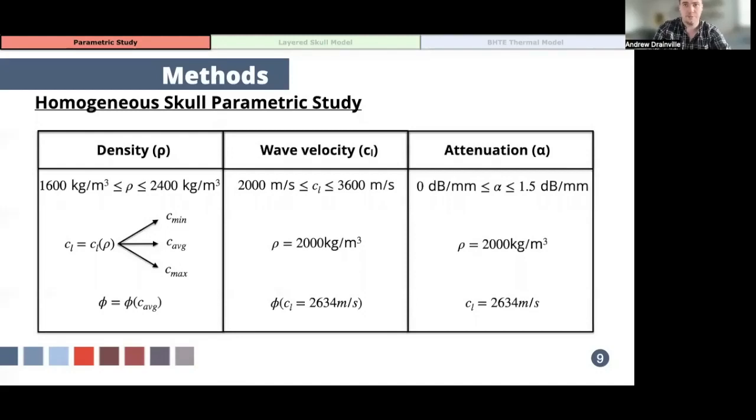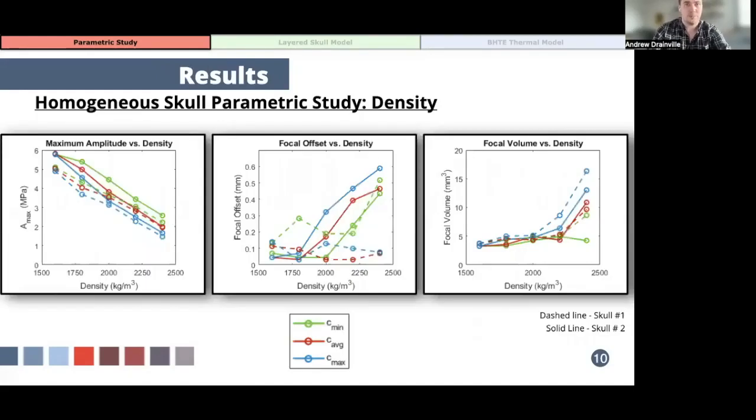So first looking at the results from varying density, here we can see the results with the minimum, average, and maximum wave speed plotted as a function of density, where you have dashed line for skull sample one and a solid line for a second skull sample. On the left, we can see a decrease in the acoustic amplitude at the focus with increase in density, which is expected as higher densities and the associated increase in speed of sound will increase the amount of energy reflected from the skull. The shift in the focal position showed little sensitivity to changes in skull density and speed of sound. While there's a greater focal offset for higher density values, the maximum offset reached a value of only about 0.6 millimeters. And then finally, on the right, we can see how the focal volume changes with density and speed of sound. The significant increase in focal volume is seen due to the effects of defocusing, which occurs most at higher density values where there is the most disagreement between conversion algorithms.